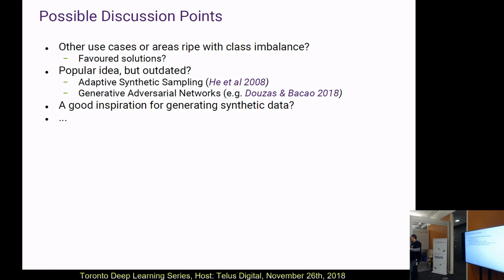The second question is about computational speed. I've only used the imbalanced-learn implementation, which is reasonably fast because it can take advantage of parallel processing. But someone tried it on a dataset of around a quarter million samples and it took forever — they just gave up.